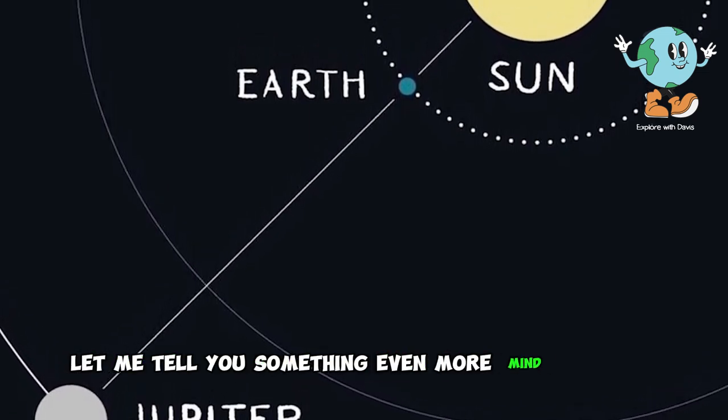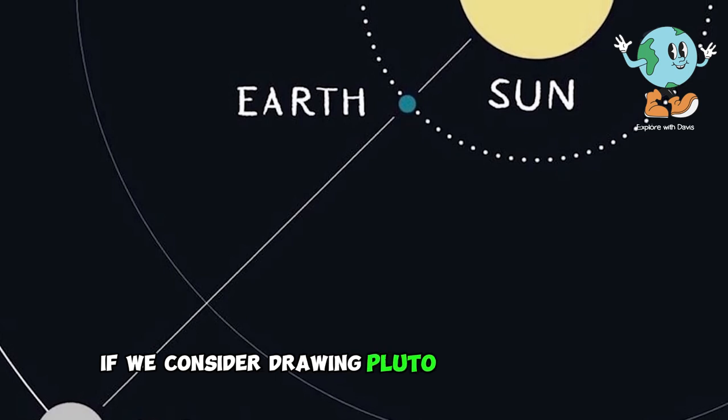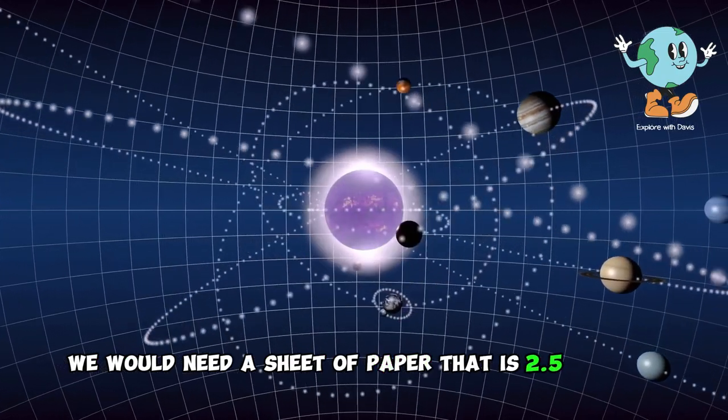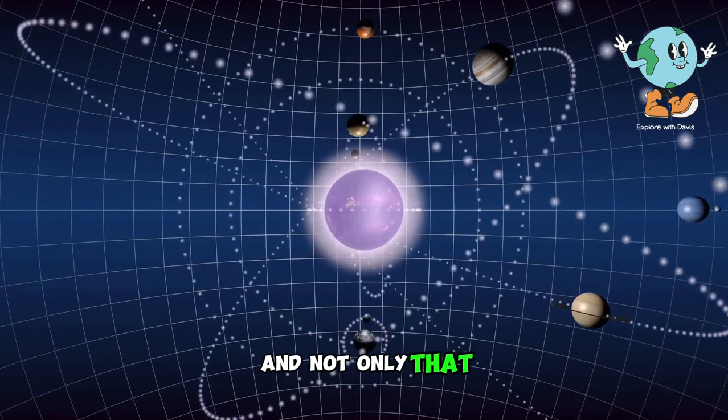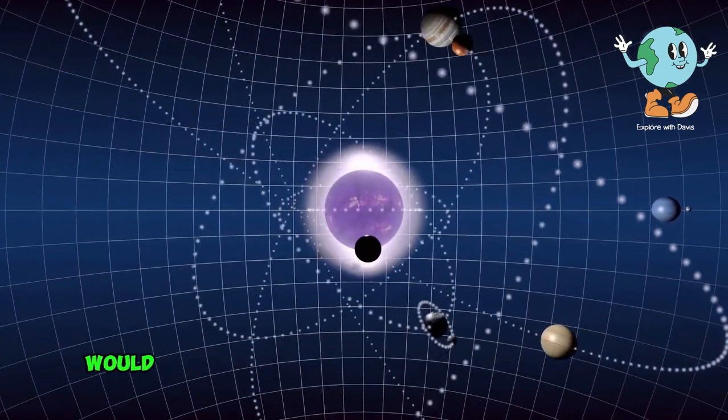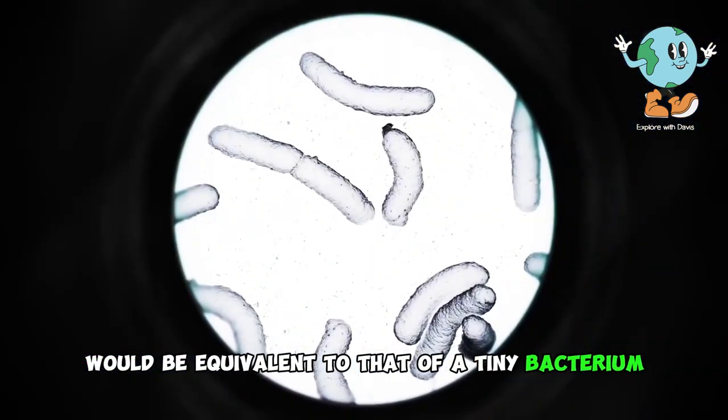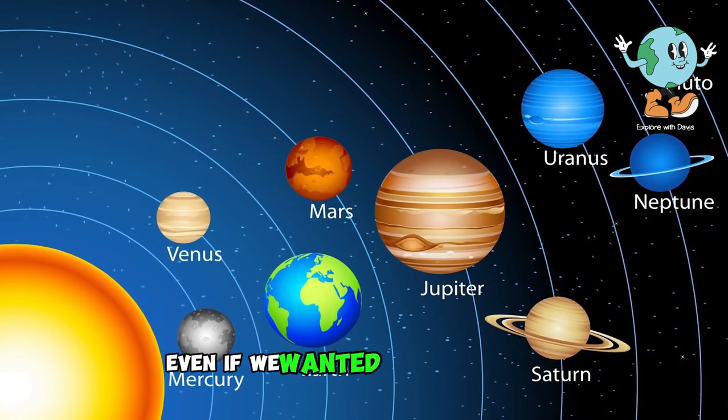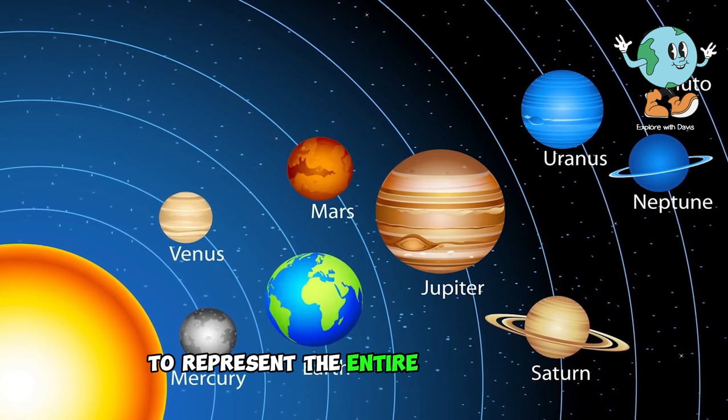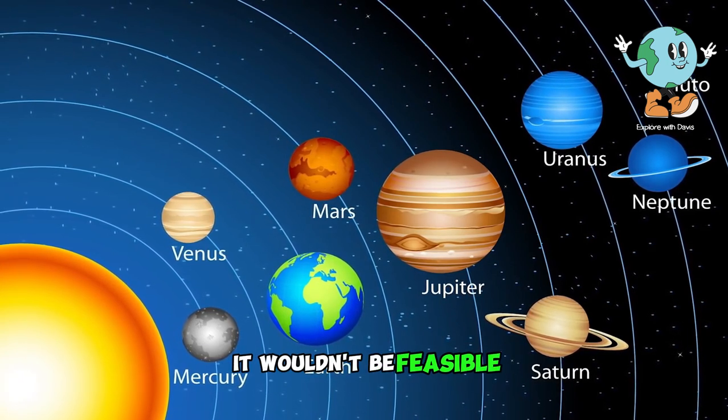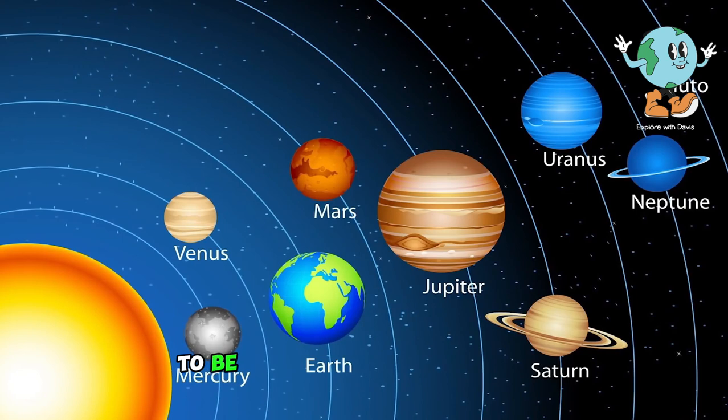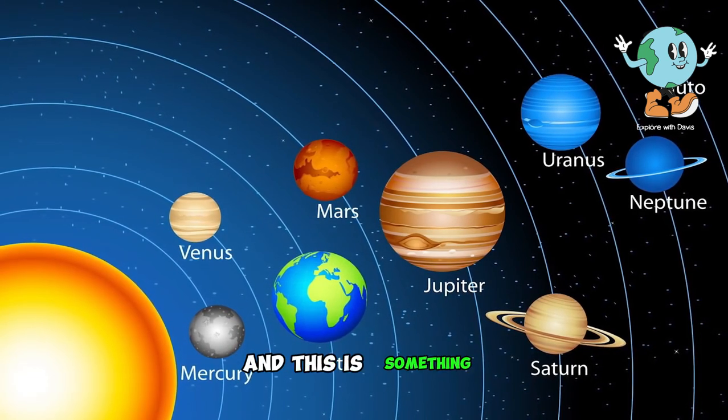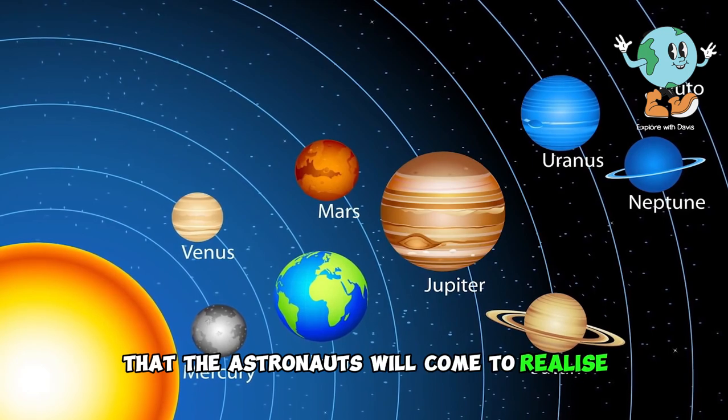Before you react and express your astonishment, let me tell you something even more mind-boggling. If we consider drawing Pluto along with them on the same paper, we would need a sheet of paper that is 2.5 kilometers long. And not only that, the size of Pluto on the paper would be equivalent to that of a tiny bacterium. Our solar system is truly vast, and this is something that the astronauts will come to realize during their journey.